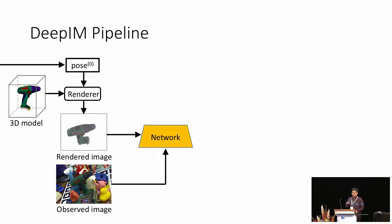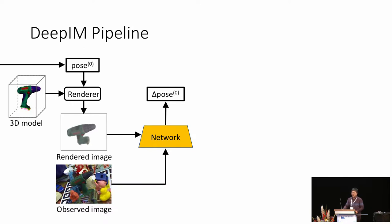Then we input the rendered image and the observed image to our network and get a prediction, delta pose zero, which represents an estimate for the transformation from pose zero to the correct pose of the object. This estimated transformation can be used to update pose zero to pose one, which can be expected to be closer to the ground truth pose.